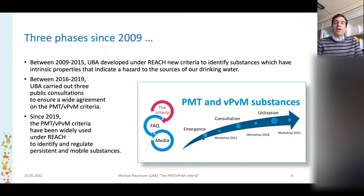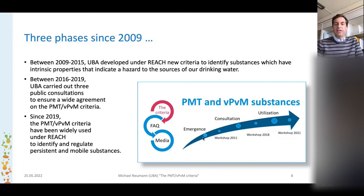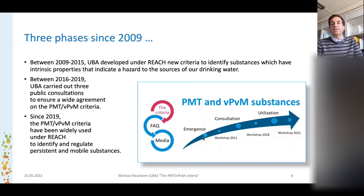So how were the PMT/vPvM criteria developed? As you can see in the figure, we have three phases. We call them emergence, consultation, and utilization.